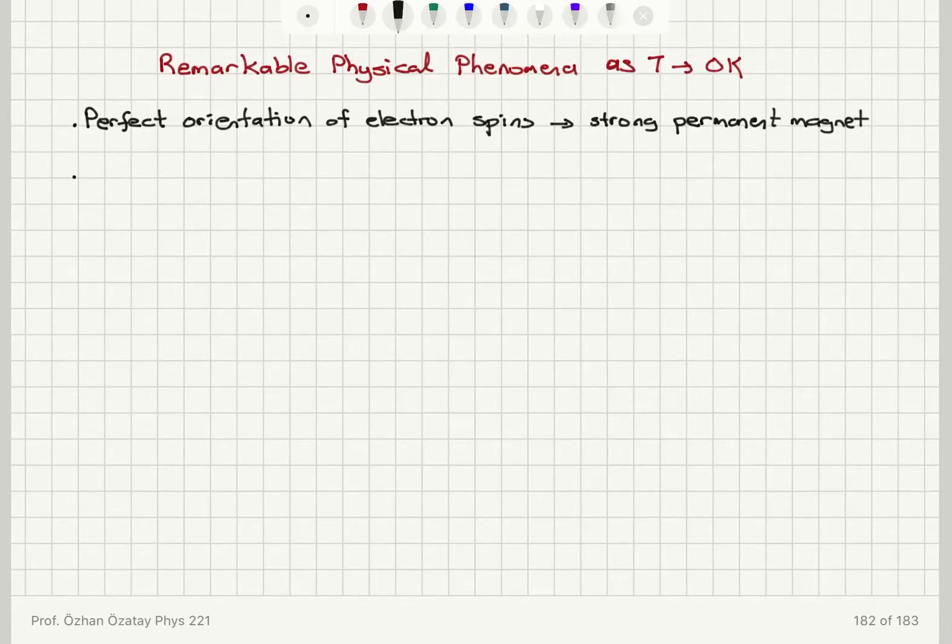The other thing is if you cool some materials below a critical temperature, you can achieve zero electrical resistance. This phenomenon is known as superconductivity. And the critical temperature that you need is, for example, 7.2 Kelvin for lead.